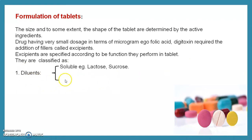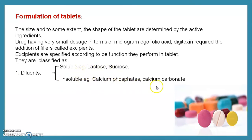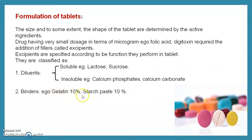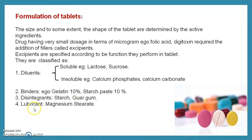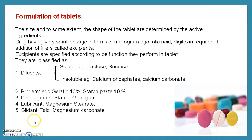Diluents can be soluble — example: lactose, sucrose — or insoluble — example: calcium phosphate, calcium carbonate. Binders include gelatin and 10% starch paste. Disintegrants include starch and guar gums. Lubricant: magnesium stearate. Glidants: talc and magnesium carbonate — glidants give free-flowing nature while lubricants provide lubricating action. Anti-adherent: magnesium stearate is also used as an anti-adherent.